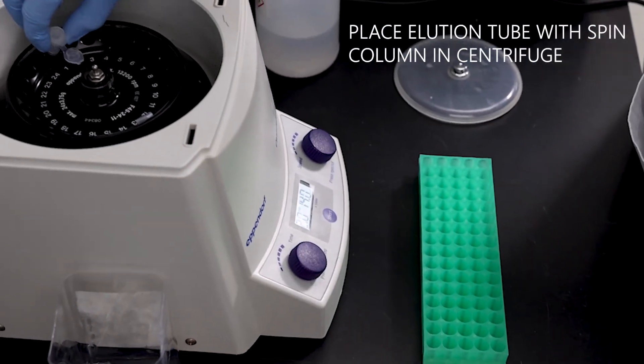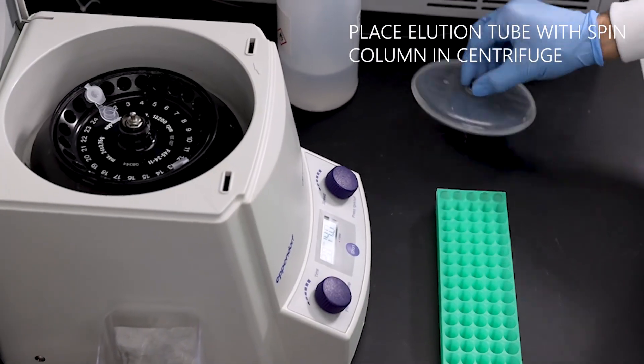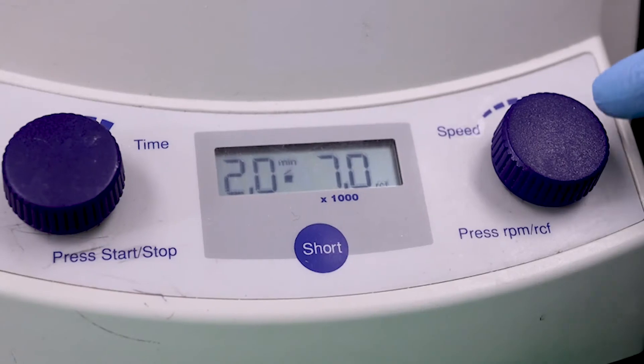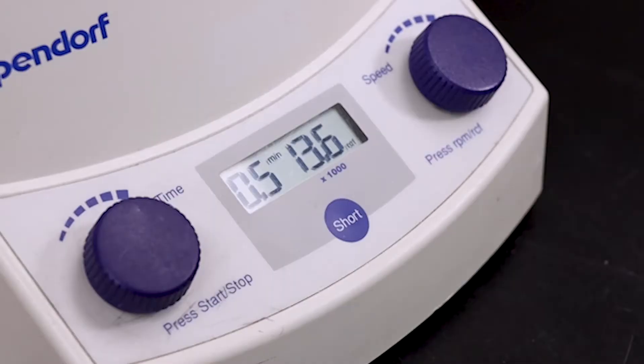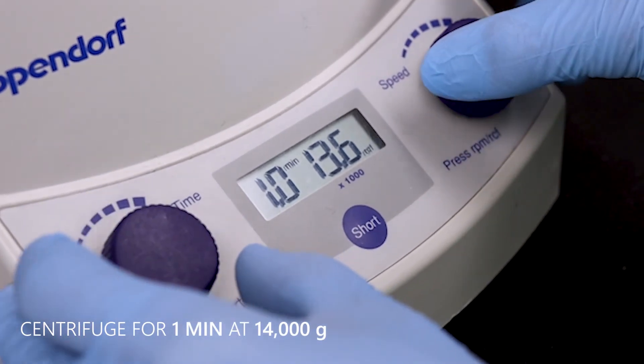Then place the Elution tube with the spin column in a centrifuge. Centrifuge for 2 minutes at 2,000 G. Then centrifuge for 1 minute at 14,000 G.